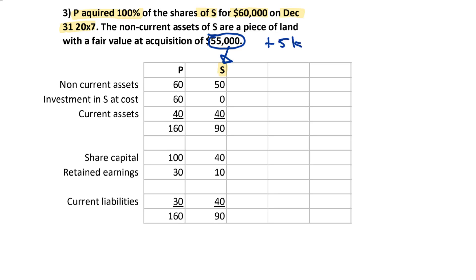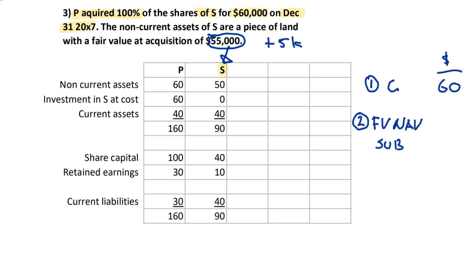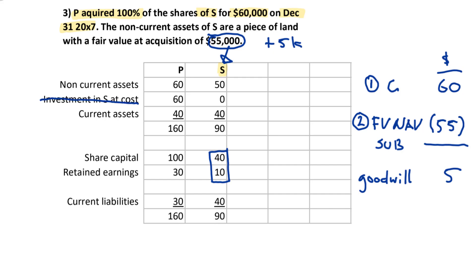Let's do the goodwill calculation again. Consideration — how much did we pay? $60,000. Now we want the fair value of the net asset value of the subsidiary: that will be the share capital plus retained earnings plus the $5,000 fair value uplift, giving $55,000. The difference, then, is the goodwill — now it's $5,000.